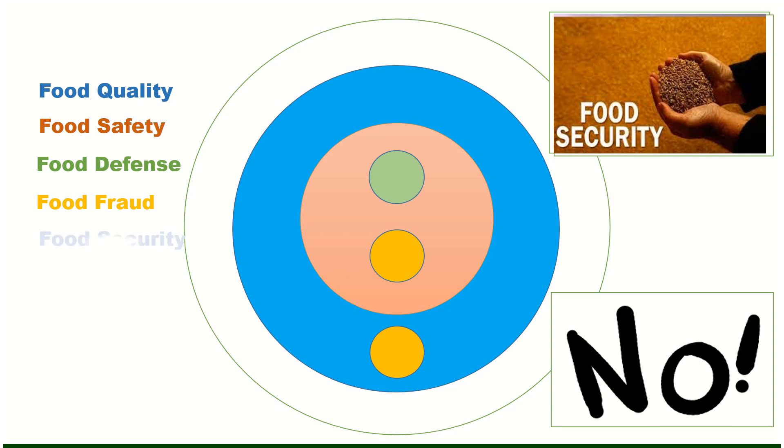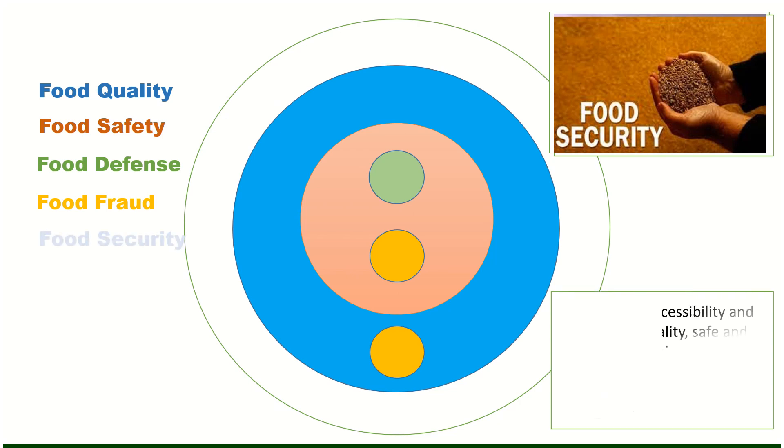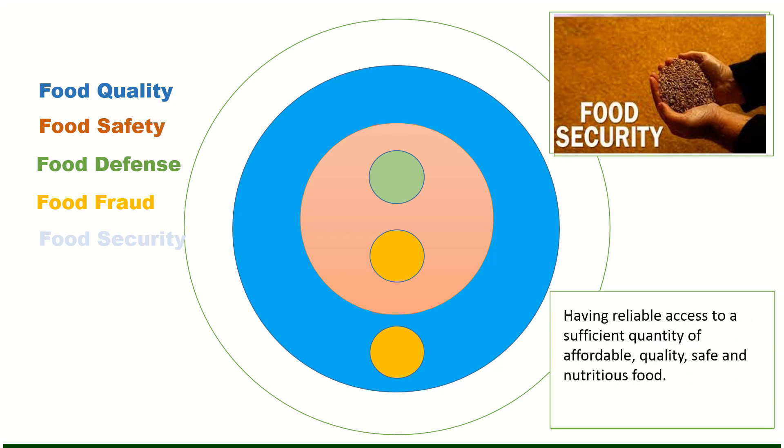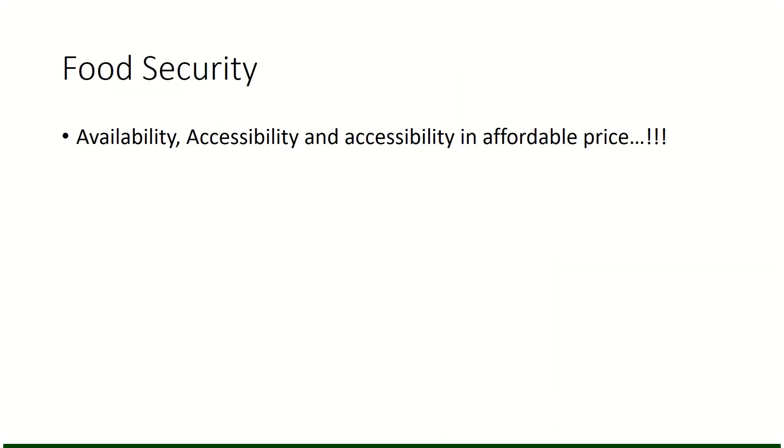Food security says availability, accessibility and stability of quality, safe and nutritious food to all at all times to keep them healthy. Another definition to understand food security is the state of having reliable access to a sufficient quantity of affordable quality and safe and nutritious food. So availability, accessibility, and stability in affordable price are the key terms in food security and additional things which stand out food security from food quality, food defense, food safety and food fraud.